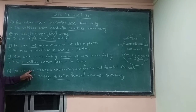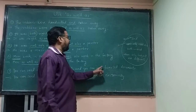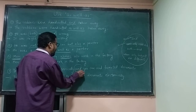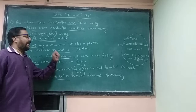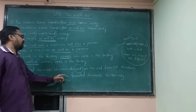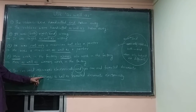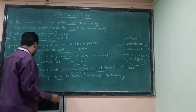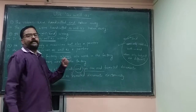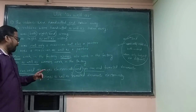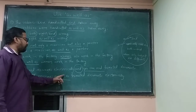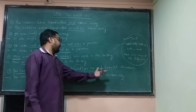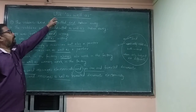Here is a bigger sentence: 'You can send messages electronically and you can send formatted documents.' The word 'and' is a conjunction. Remove 'and' and use 'as well as' in its place. Notice that 'you can send' is repeated, so it is not necessary to write it again. Therefore the sentence becomes: 'You can send messages as well as formatted documents electronically.' These are the rules for 'as well as'.